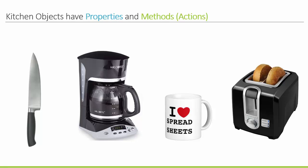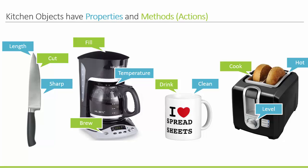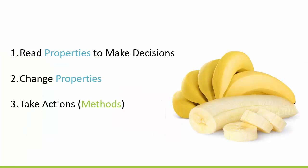I like to use the analogy of a kitchen and the objects in your kitchen. Basically, if you think about all the objects in your kitchen, they all have properties and methods as well — different actions we take with these objects, and certain properties we can either set or use to make decisions. That's basically the core concept of programming in VBA.